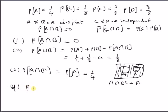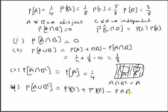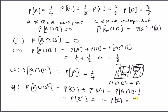Next is probability of A∪B complement. From part three, probability of A∩B complement equals probability of A. So probability of A∪B complement equals probability of B complement, which is 1 minus probability of B, equal to 7/8.